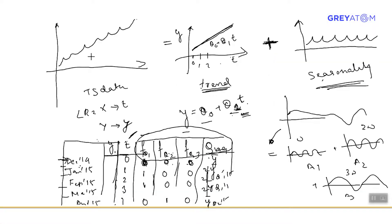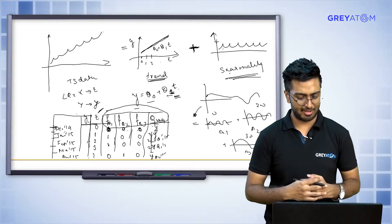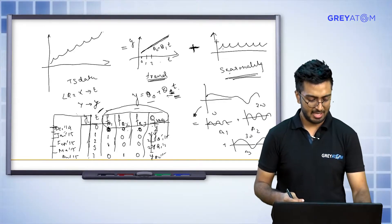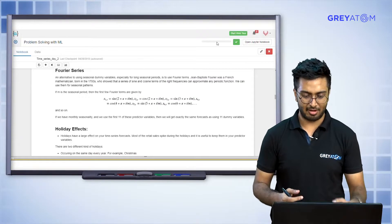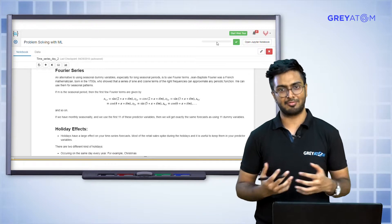That is exactly what we are trying to do here as well. When we decompose a time series, we are basically trying to get into a trend plus multiple seasonal patterns. This seasonal pattern in itself could be composed of multiple seasonal patterns — there's a weekly pattern, a monthly pattern, a yearly pattern. That is exactly what Fourier transform does.